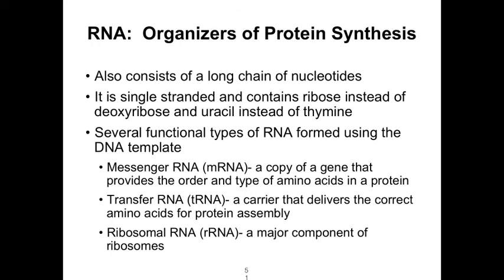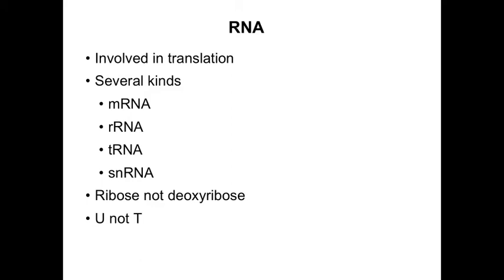There are several functional types of RNA formed from a DNA template. Messenger RNA is a copy of a gene that provides the order and type of amino acids for a protein. It moves from the nucleus, carrying the DNA's message, to the ribosome where the protein is manufactured. Transfer RNA delivers the correct amino acids to the ribosome to build the protein. Ribosomal RNA is a major component of the ribosomes. Small nuclear RNA, while having a smaller role, is important in gene expression — specifically in snipping out introns, the inactive portions of DNA.